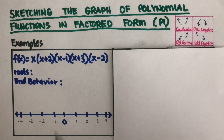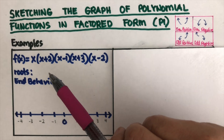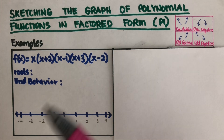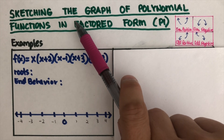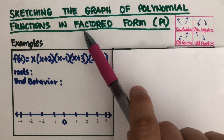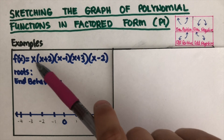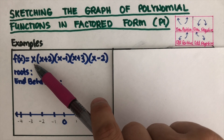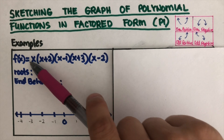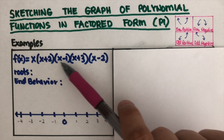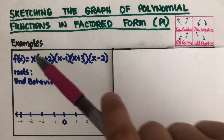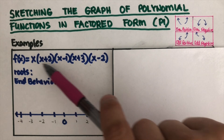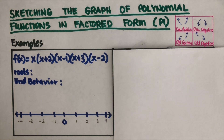Let's get into the first example. So a polynomial function in factored form — this is an example of a factored form of a polynomial.